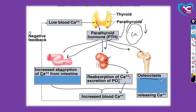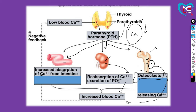Osteoclast, jo ki aapke bone eating cells hote hain - yeh jo bone eating cells hote hain bone ko eat kar lete hain. Purani bones ko eat kar lete hain aur uske baad nayi bones banna start hoti hain. Toh yeh jo cells hote hain jo purani bones ko eat kar rahe hain, isme ka jitna bhi calcium lete hain, yeh blood mein jaakar release karte hain. Is tarah se aapke blood mein calcium level maintain ho jaata hai.